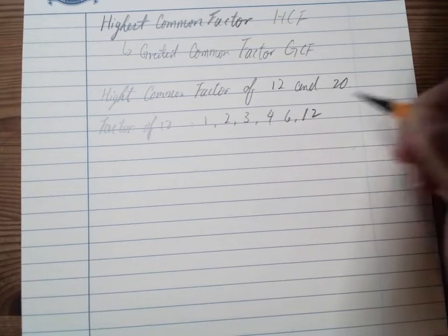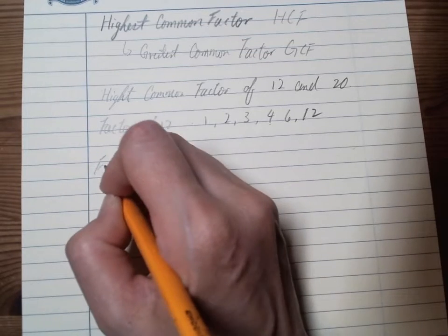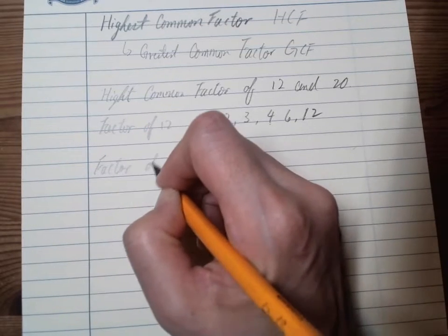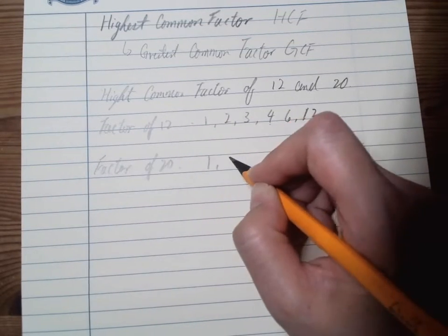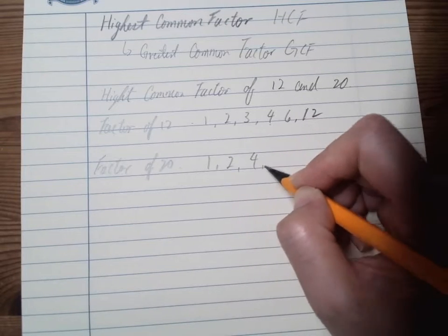And then the factor of 20 will be 1, 2, 4, 5, 10, and 20, if I'm not correct, yes.